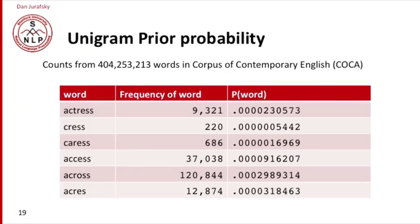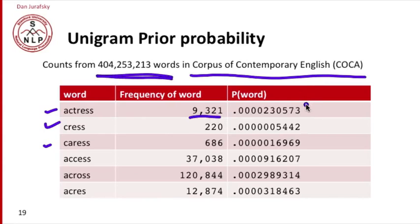Let's look at an example of a language model. Here I picked just a very simple unigram. In this case, we've computed the unigram from the corpus of contemporary American English. Here's some counts. Here's counts of the different possible candidates: actress, cares, caress, and so on. Here's their frequency and normalized by the total number of words, we get a probability.